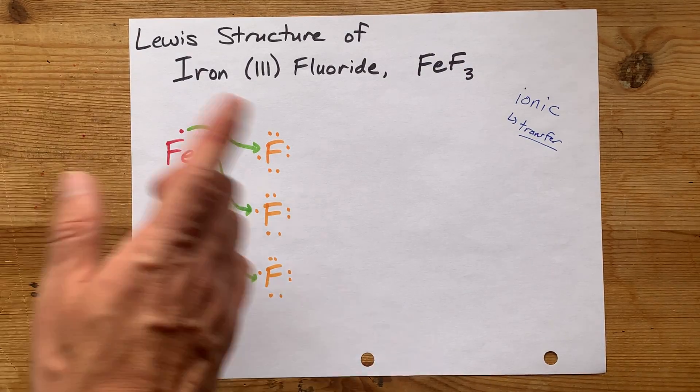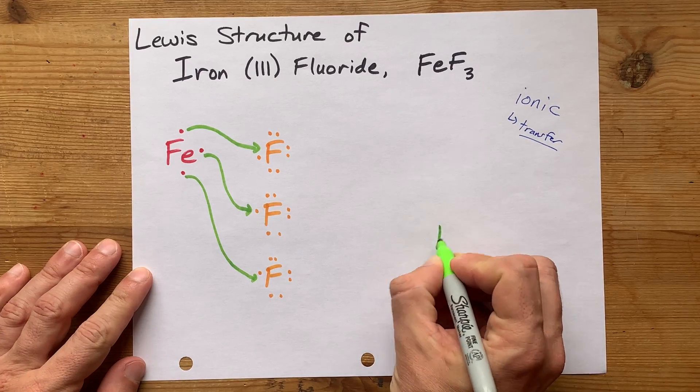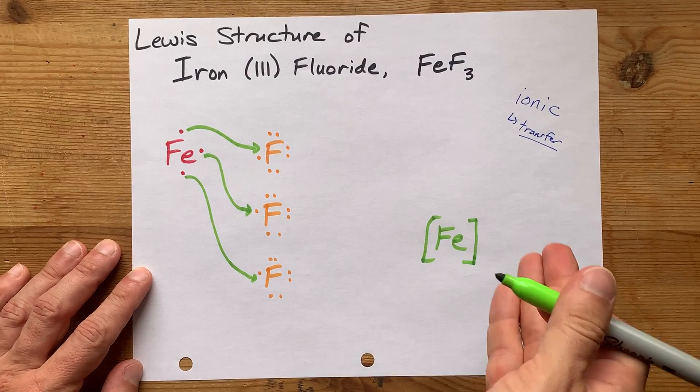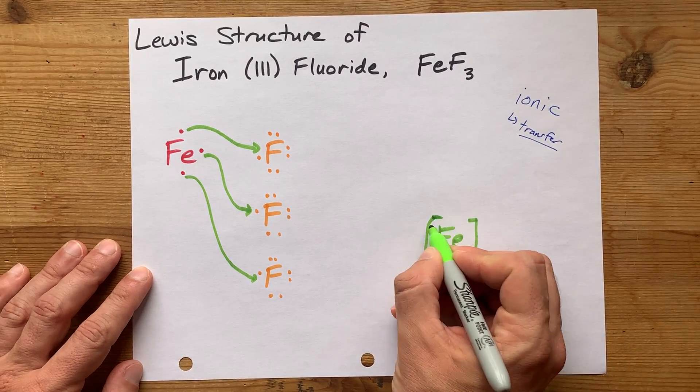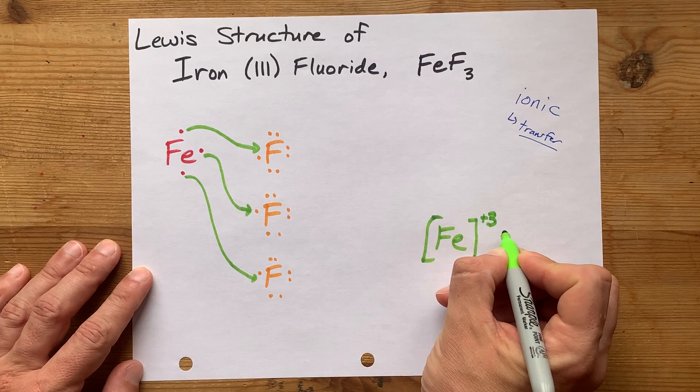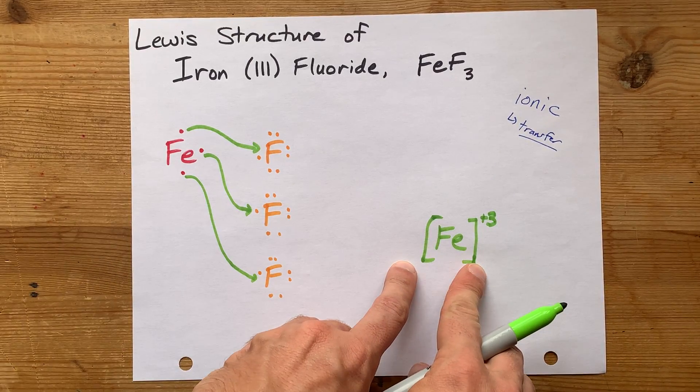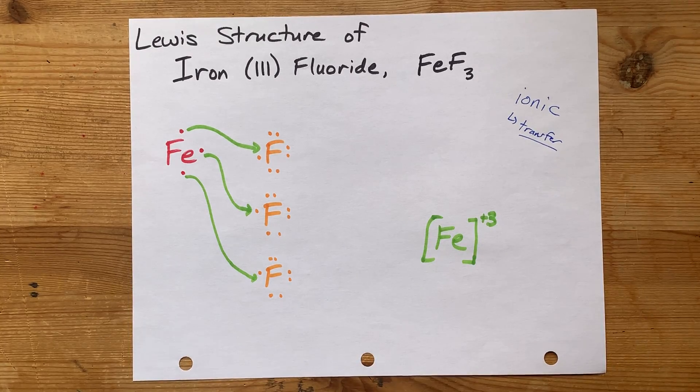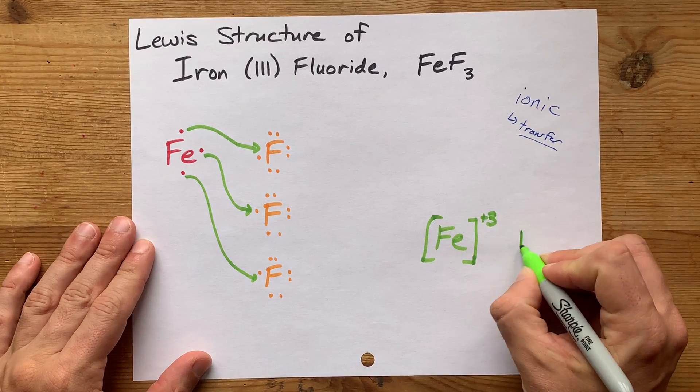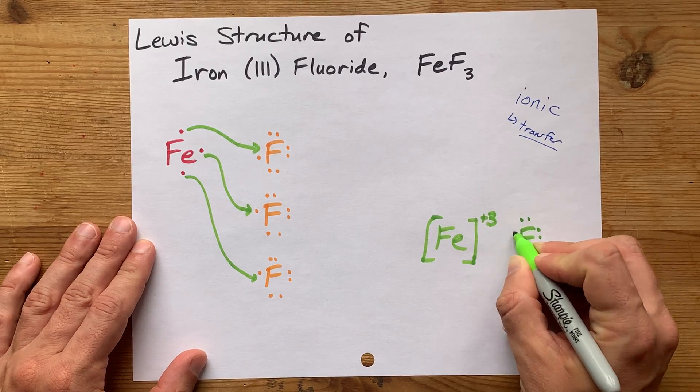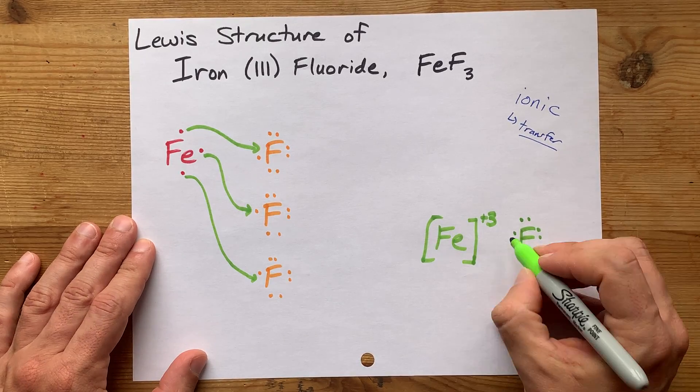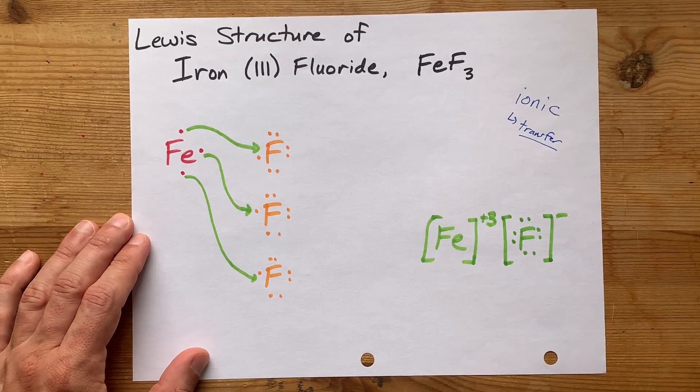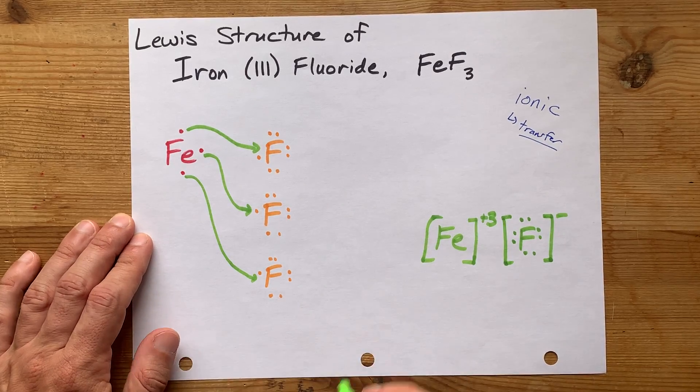Now, your complete Lewis structure will have Fe written in the center. Don't put any dots around it, because it gave away all its valence electrons. But do put square brackets and a plus three charge. That's how we show ions in Lewis structures, and the charge shows that it lost three valence electrons. Then, I want you to draw fluorine atoms with their seven, oh wait, eight electrons, because they accepted one electron each. And a minus charge, because they have one extra negatively charged electron.